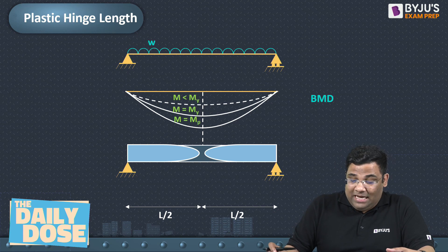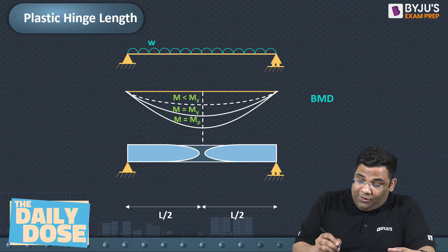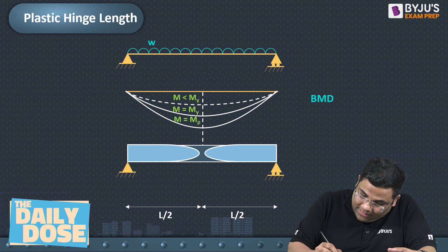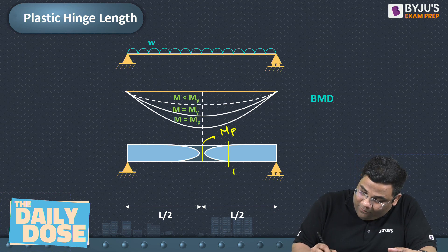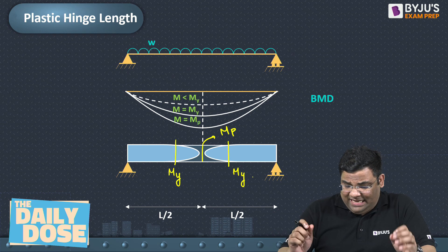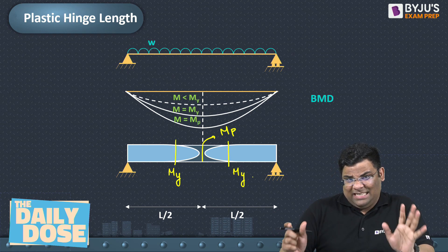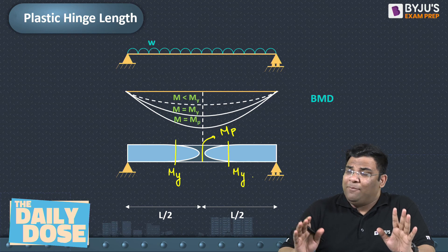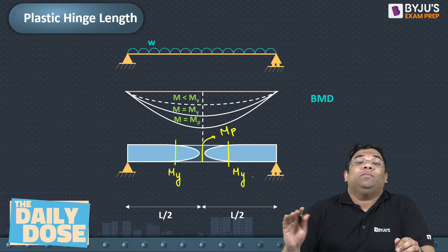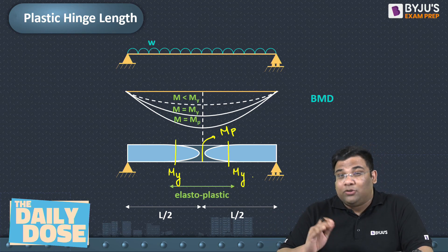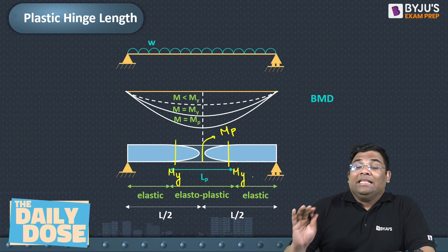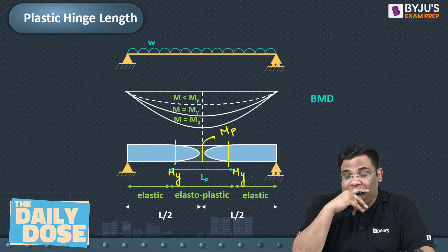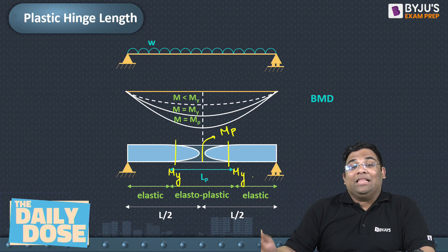A plastic hinge is formed at the mid-span. In this zone, the moment is Mp at the center, and My at the boundaries. So in this total plastic hinge zone, the moment varies between My and Mp. Beyond this zone it is less than My. This zone is called the elasto-plastic zone, and the rest are the elastic zones. The length of this elasto-plastic zone is known as the length of the plastic hinge.